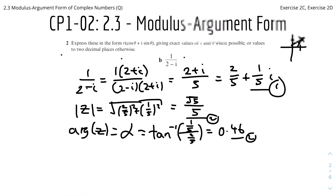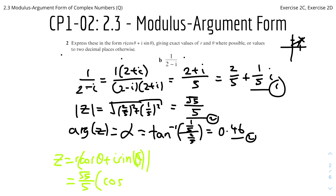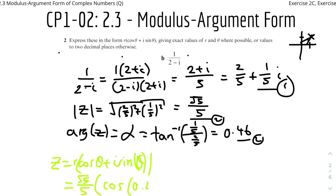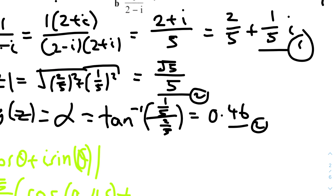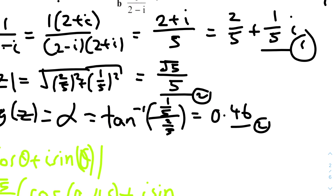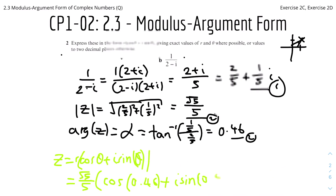Therefore we can assemble the full answer: z = (√5/5)(cos 0.46 + i sin 0.46).